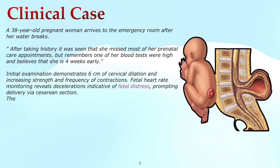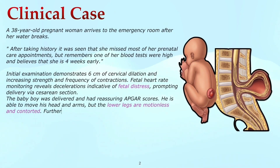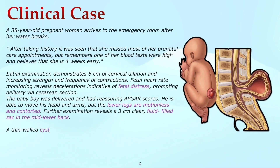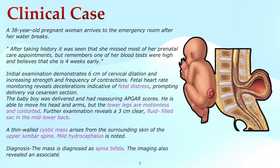The baby boy was delivered and had reassuring APGAR scores. He is able to move his head and arms, but the lower legs are motionless and contorted. Further examination reveals a 3 cm fluid-filled sac in the mid-lower back. A thin-walled cystic mass arises in the surrounding skin of the upper lumbar spine. Mild hydrocephalus is noted. The mass is diagnosed as spina bifida. Imaging also revealed an associated Chiari malformation and myelomeningocele.